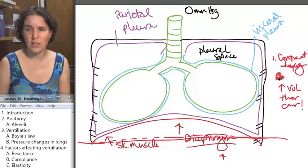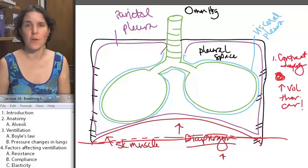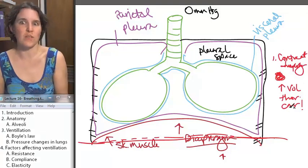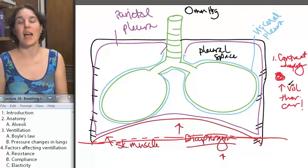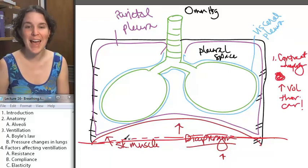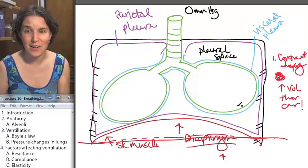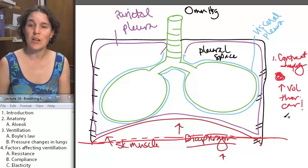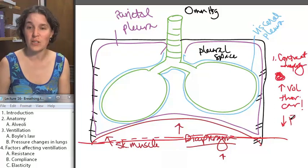Number one, contract diaphragm. Consequences of contracting your diaphragm: you increased volume of the thoracic cavity. I contract my diaphragm, the volume of my thoracic cavity increased. What happens to the pressure inside there? If I increase the volume, my pressure decreases.